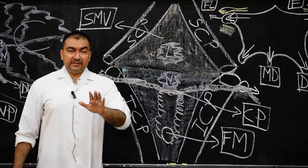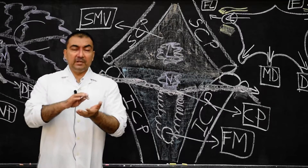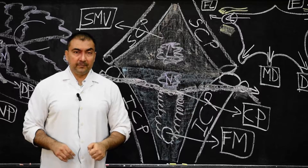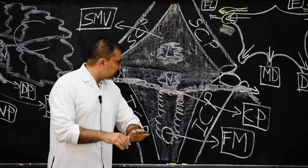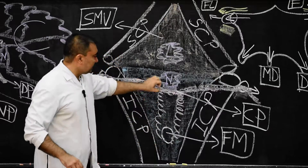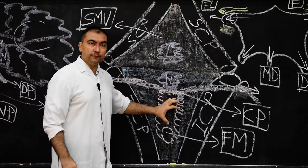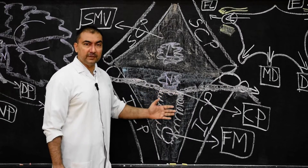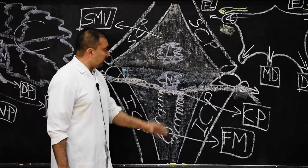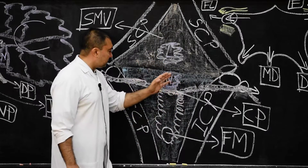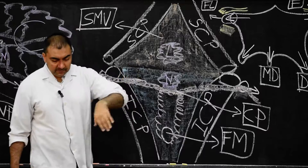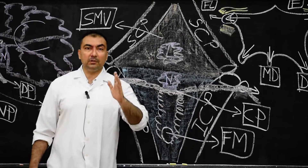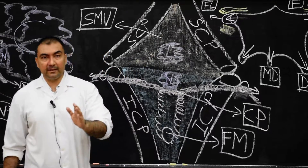The choroid plexus is present between the two layers of the tela choroidea of the fourth ventricle and forms a bulging in the lower part of the roof of the fourth ventricle. Here we finish the tela choroidea and choroid plexus. Coming up in the next segment will be the floor of the fourth ventricle.